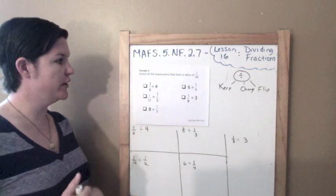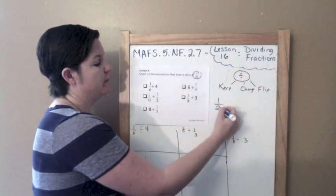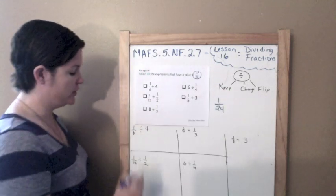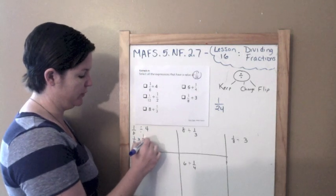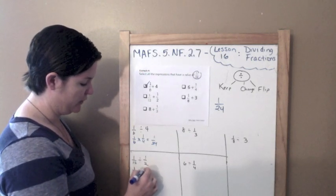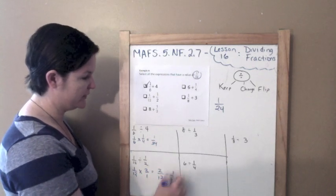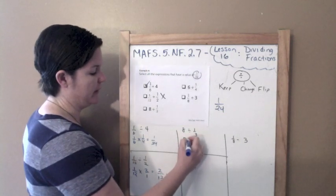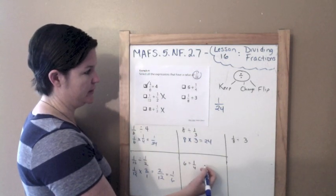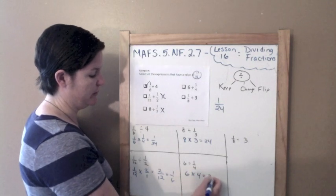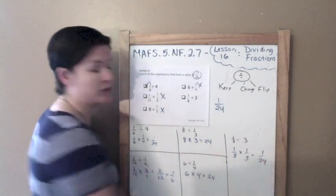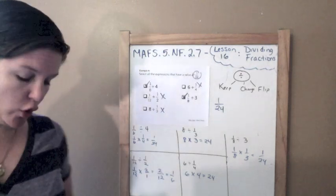Example 4: Select all the expressions that have a value of 1/24. I'll divide all of these out using keep, change, flip and see if I get 1/24. First expression: keep, change, flip to 1/4 — that gives 1/24. Yes. Second: keep, change, flip gives 2/12, which reduces to 1/6. Nope. Third: 8 divided by 3 — keep, change, flip gives 24. Nope. Fourth: 6 divided by 1/4 — keep, change, flip gives 24. Nope. Fifth: keep, change, flip — 1 times 1 is 1, 8 times 3 is 24, so 1/24. The first and the last are the answers.